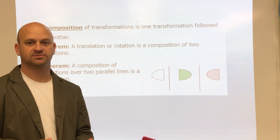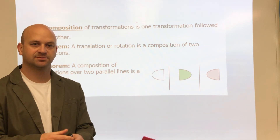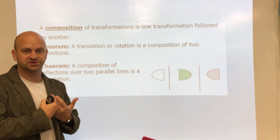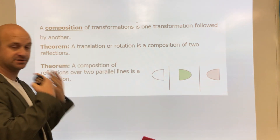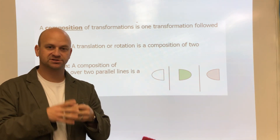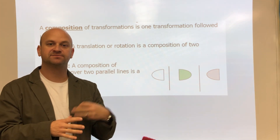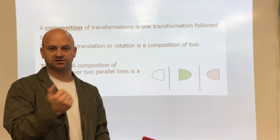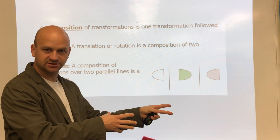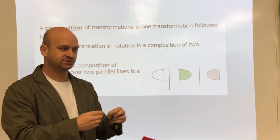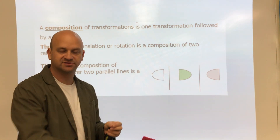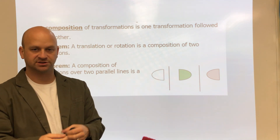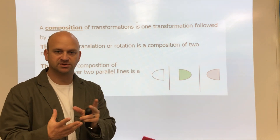Today we're going to talk about compositions. Compositions are transformations where one is followed by another — really just a combination of transformations. We could do a reflection and a rotation and then a translation, a couple of reflections in a row, or a rotation and then a reflection.